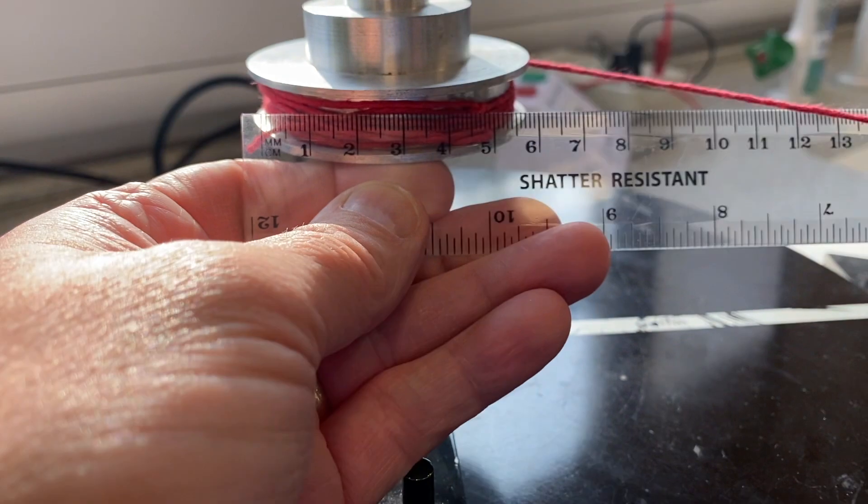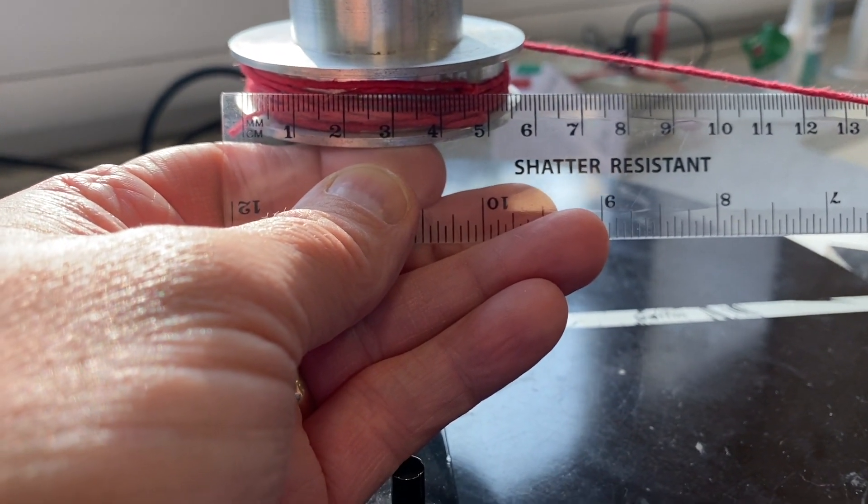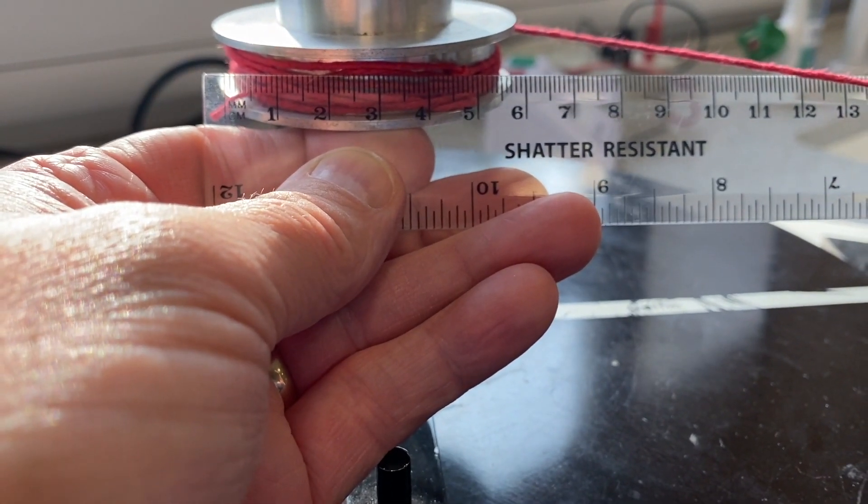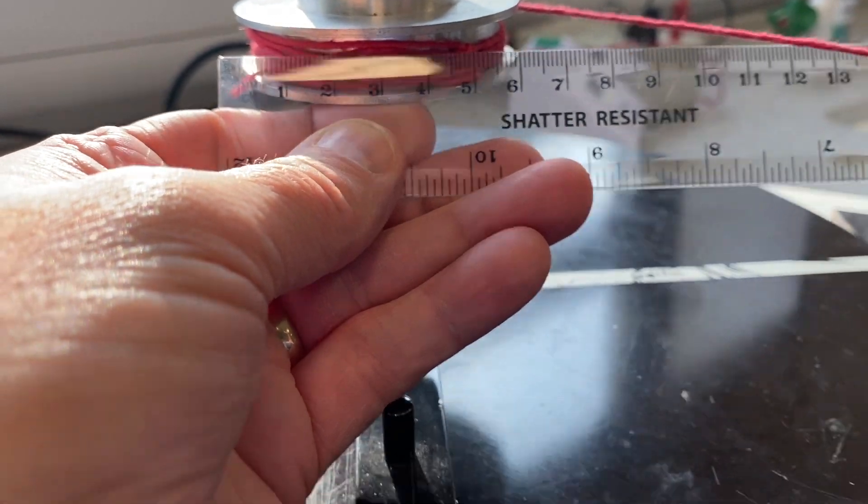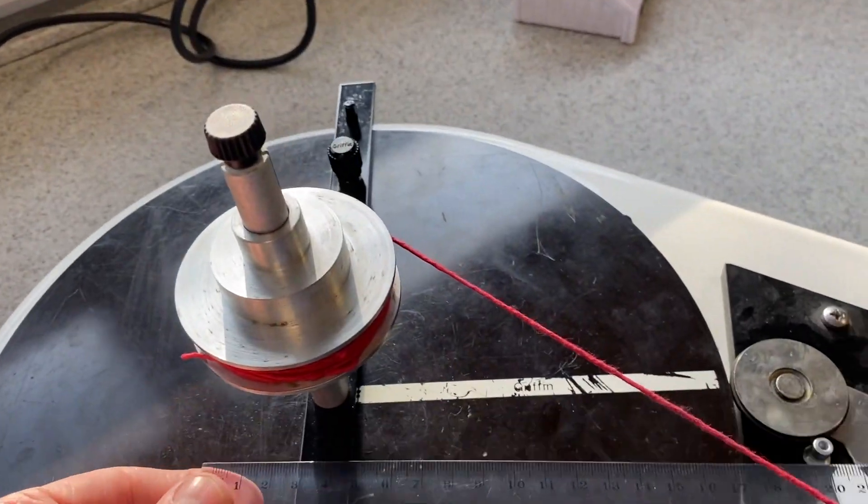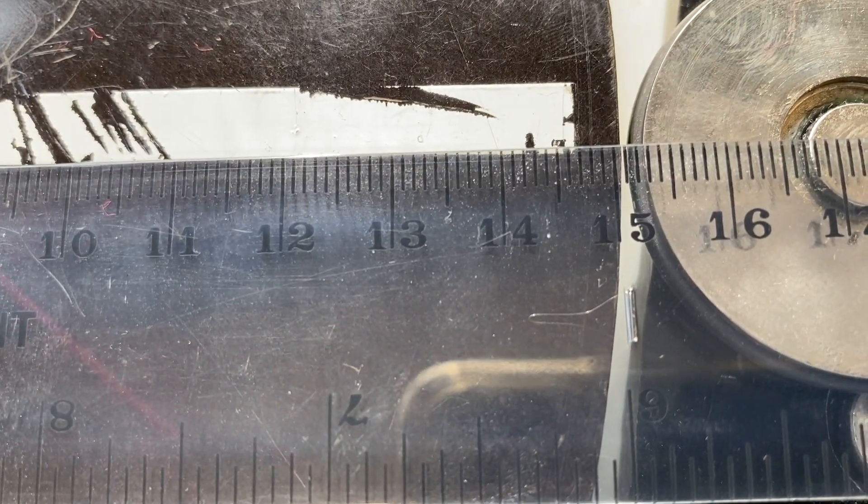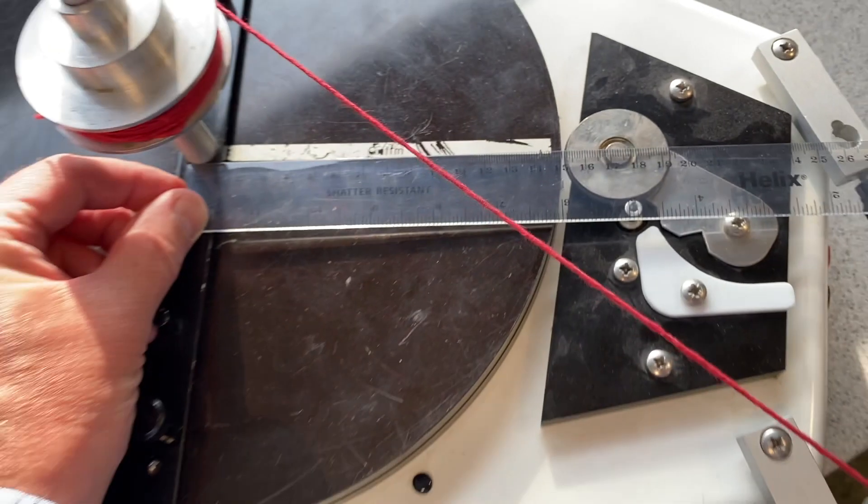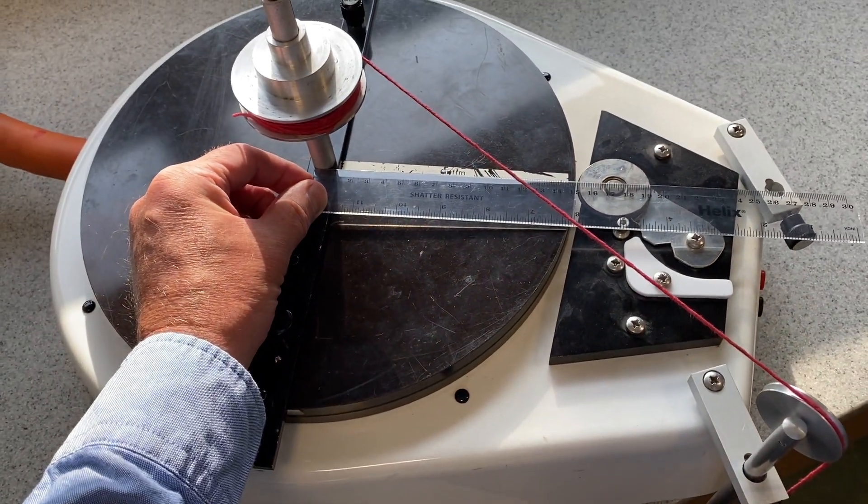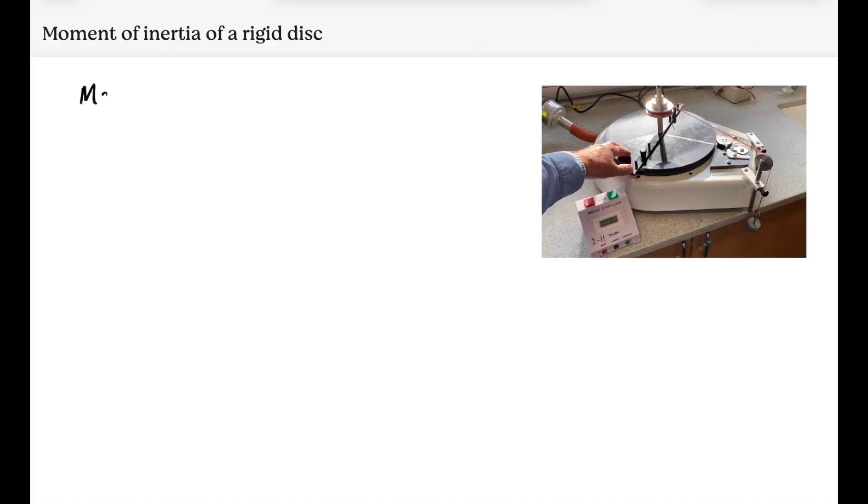And then the only other measurements we need are the radius of the pulley, which has got a diameter of 5.5 centimeters. And let me measure the radius of the disk itself, which is 15 centimeters. And now we've got all the measurements we need to work out the moment of inertia of the disk.